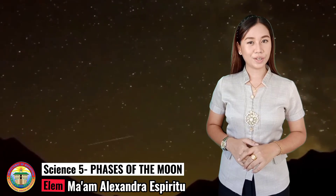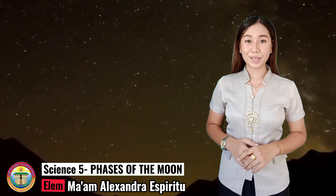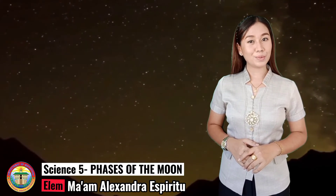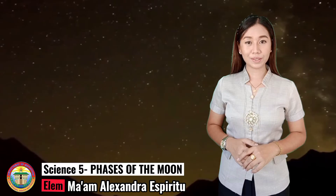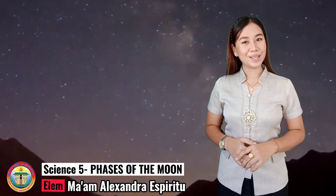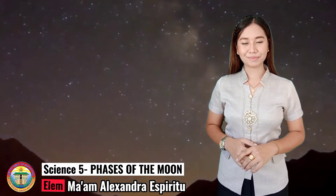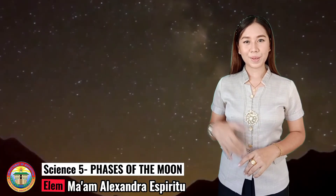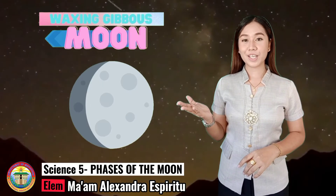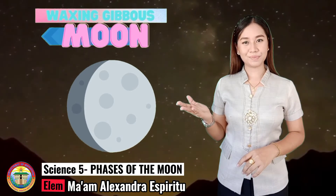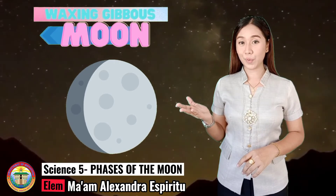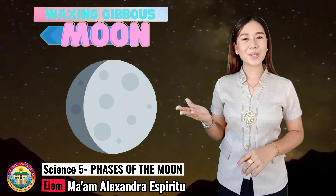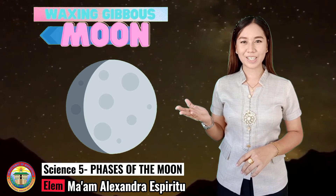Number 4: The Moon is increasing in light between the First Quarter Moon and a Full Moon. Waxing Gibbous Moon. If your drawing looks like this, then your answer is correct.